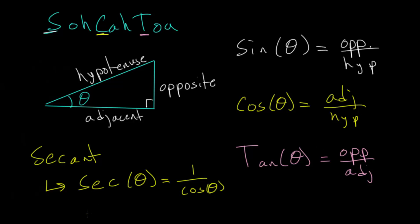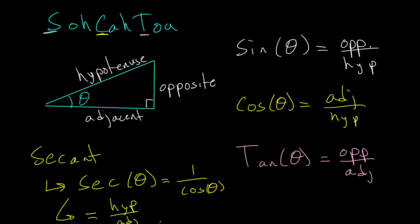When we look at comparing the side lengths, since cosine is adjacent over hypotenuse, the secant — being the reciprocal of it — we just flip these over. So the secant is the ratio of the hypotenuse to the adjacent side. That's one of our definitions.